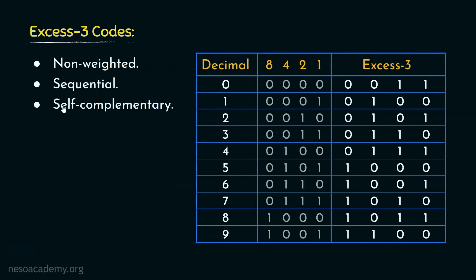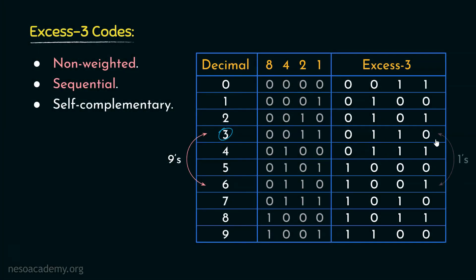When we study XS3 codes, we said they are non-weighted, and that is correct — because although we take help from 8421 to derive them, XS3 itself is non-weighted. However, despite being non-weighted, all the patterns for 0 to 9 are sequential. We also claimed these are self-complementary. For illustration, take the symbol 3. The 9's complement of 3 is 6 (since 9 minus 3 is 6). The pattern for 3 is 0110, and the pattern for 6 is 1001. These two patterns are the 1's complement of one another, confirming that XS3 is indeed self-complementary.